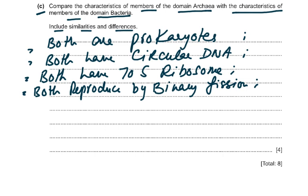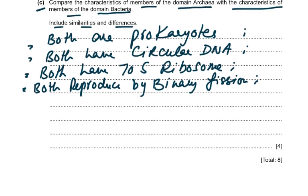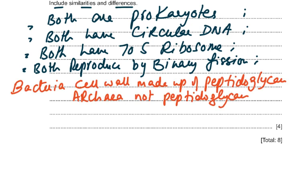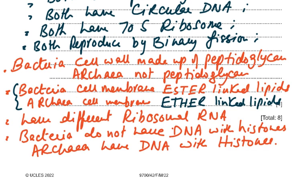For similarities: both are prokaryotes, both have circular DNA, both have 70S ribosomes, and both reproduce by binary fission. For differences: Bacteria cell wall is made of peptidoglycan while Archaea is not. Bacterial cell membrane has ester-linked lipids while Archaea has ether-linked lipids. Bacteria and Archaea have different ribosomal RNA. Bacteria do not have DNA with histones, while Archaea have DNA with histones.